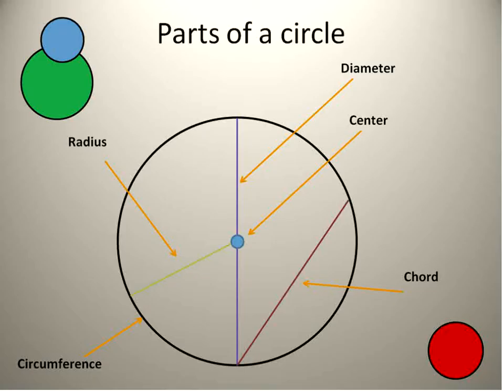So here's just a quick list of all the different parts of the circle that we've talked about: radius, chord, center, diameter, circumference — all kind of put into one picture so you can see all the different parts and how they relate to each other.